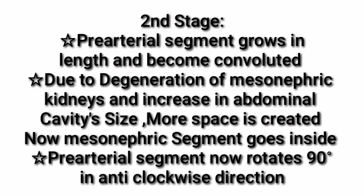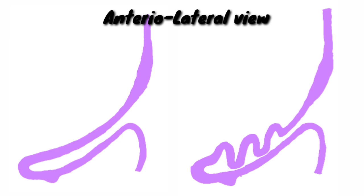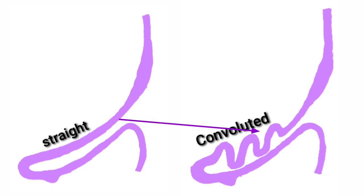In the second stage of rotation, the pre-arterial segment grows in length and becomes convoluted. Due to degeneration of mesonephric kidneys and increase in abdominal cavity size, more space is created, so the mesonephric segment goes inside the embryo. The pre-arterial segment rotates 90 degrees in the anti-clockwise direction. Previously the pre-arterial segment was straight, but now it grows in length and becomes highly convoluted as shown in the figure.